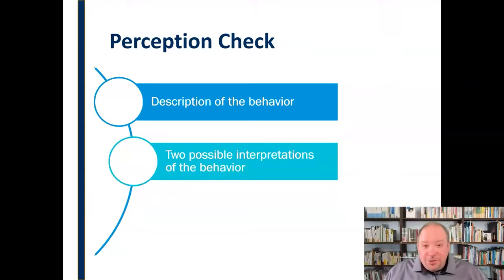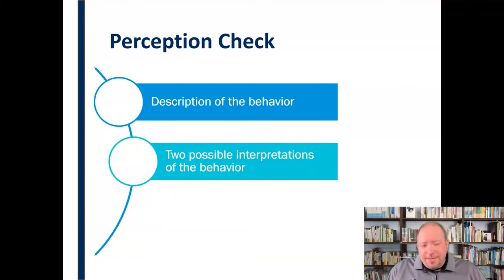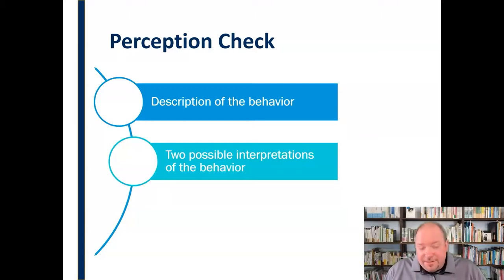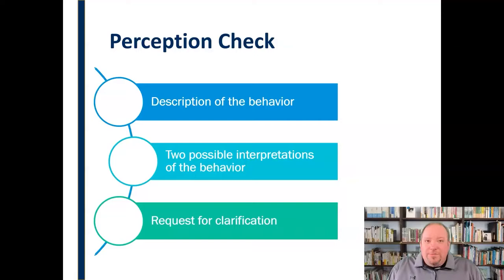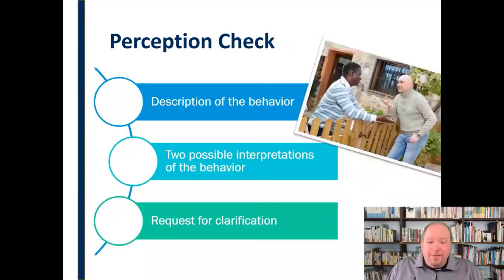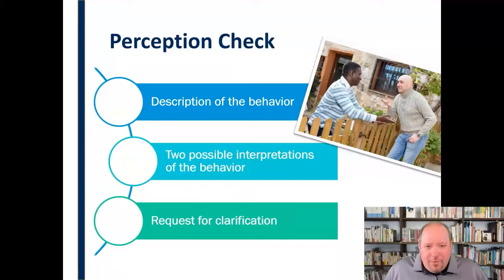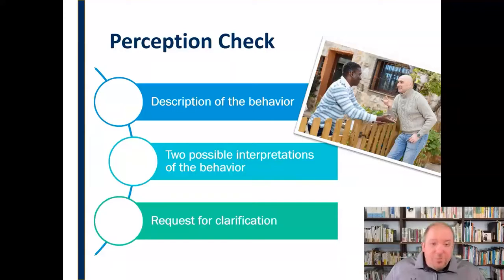The second step is to offer two possible interpretations of that behavior. It's important that there be two, because it opens the door to say you're not sure what's going on and you need the other person to explain it. It avoids making a statement of fact as though you know what's happening and the other person is wrong — that would be aggressive. This is assertive: you're identifying something that needs follow-up and offering two possible interpretations. The third step is a simple request for clarification — what's going on? Can you explain this to me?